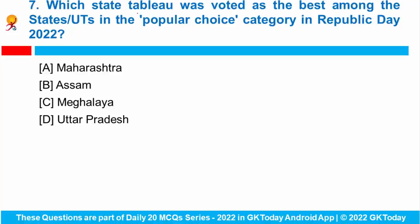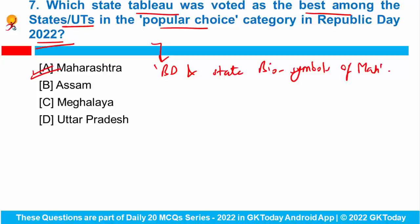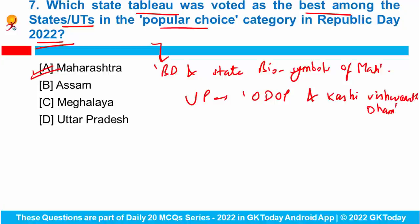Question number seven: which state tableau was voted the best among states or union territories in the popular choice category in Republic Day 2022? Maharashtra was voted the best tableau based on the theme of biodiversity and state bio-symbols of Maharashtra. The general public was invited to vote for the best marching contingents and tableaux in the popular choice category. Uttar Pradesh, based on the theme ODOP and Kashi Vishwanath Dham, was adjudged the best among 12 states and union territories.